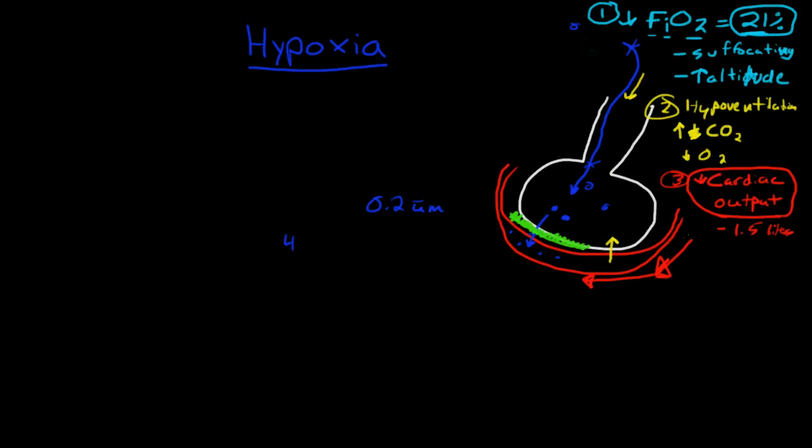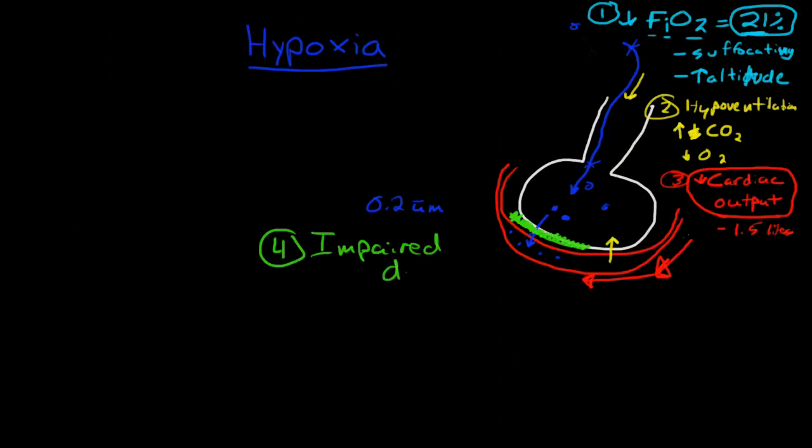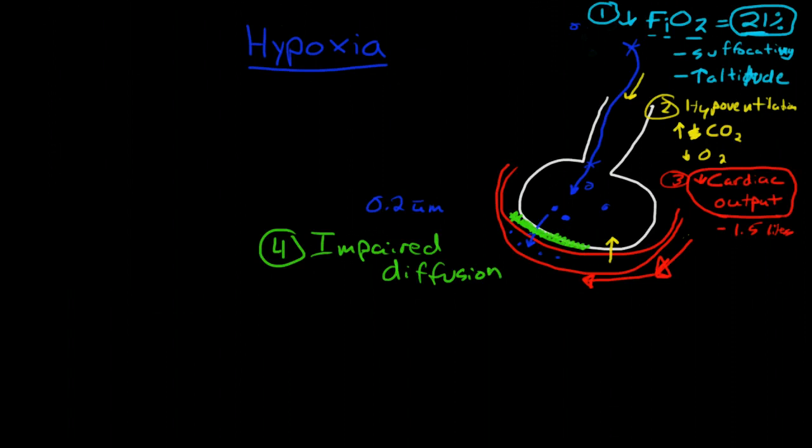So number four here would be impaired diffusion. And this happens with some diseases that cause pulmonary fibrosis, so fibrotic membrane. And we have ways of measuring diffusion.